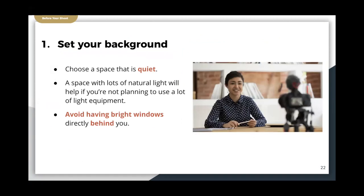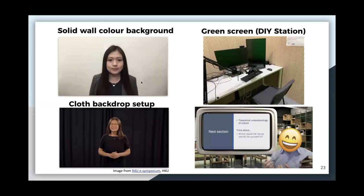In the before-filming stage, the first thing is to set your background. Don't start filming right away — take a moment to choose a quiet space with lots of natural light if you don't plan to use lighting equipment, and avoid having bright windows directly behind you because backlighting will create weird silhouettes that obscure your features. There are three free background options: a solid wall color, a cloth hung behind you, and a green screen. There are also a few DIY stations at HKU ready for you to book.